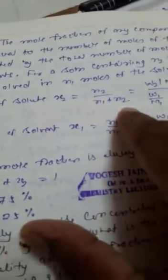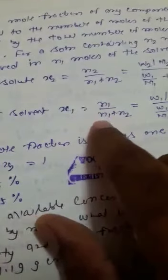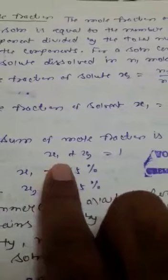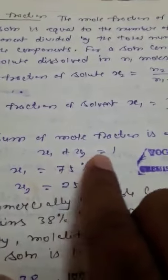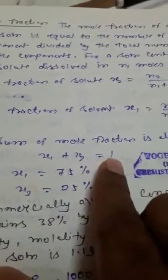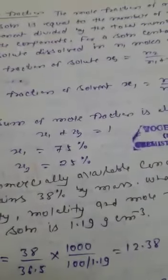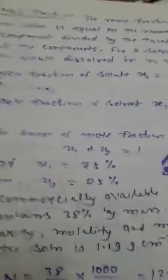For example, to calculate x2, put moles of component 2 on top and divide by total moles. Similarly, to calculate x1, put moles of component 1 on top and divide by total moles. The sum of mol fraction of all the component always equal to 1. If you calculate x1, then to get x2 you can subtract x1 from 1.